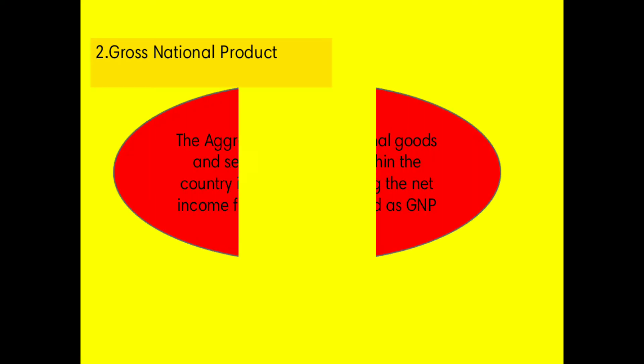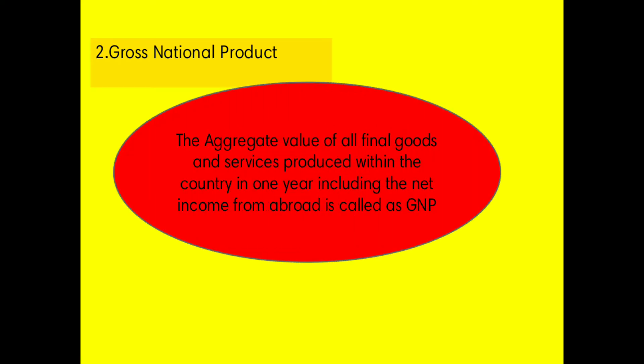The next identity is Gross National Product. The aggregate value of all final goods and services produced within a country in one year, including the net income from abroad, is Gross National Product. Net income from abroad is the income you earn from foreign countries. The formula is GNP equals GDP plus R minus P, where R minus P is net income from abroad.